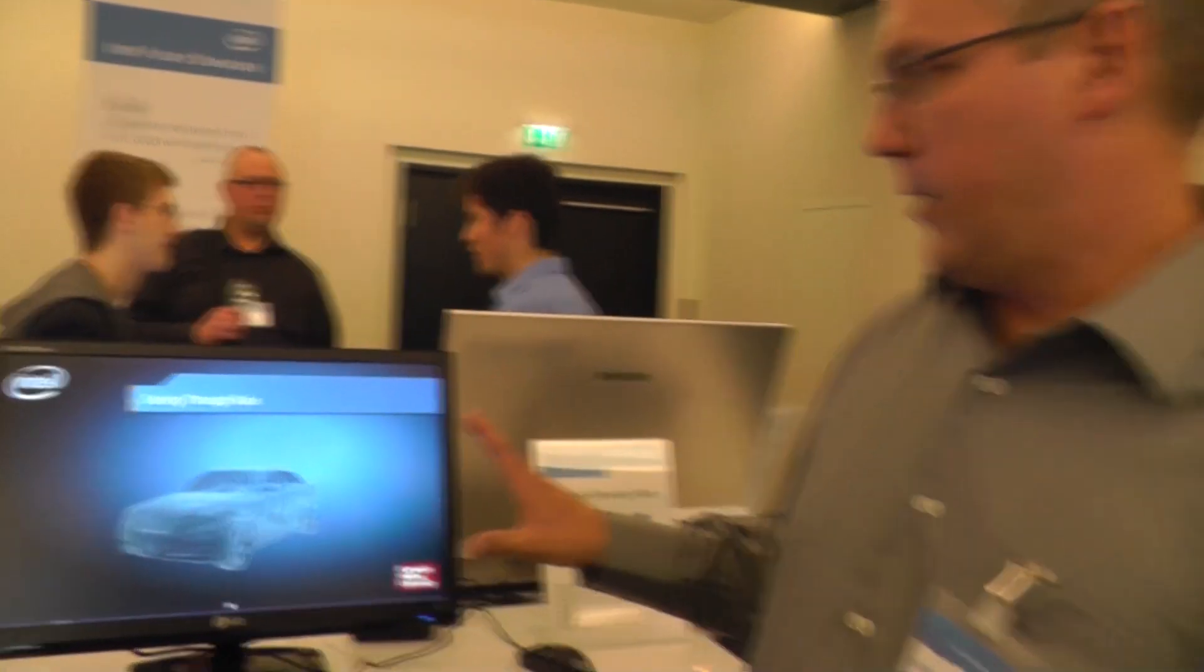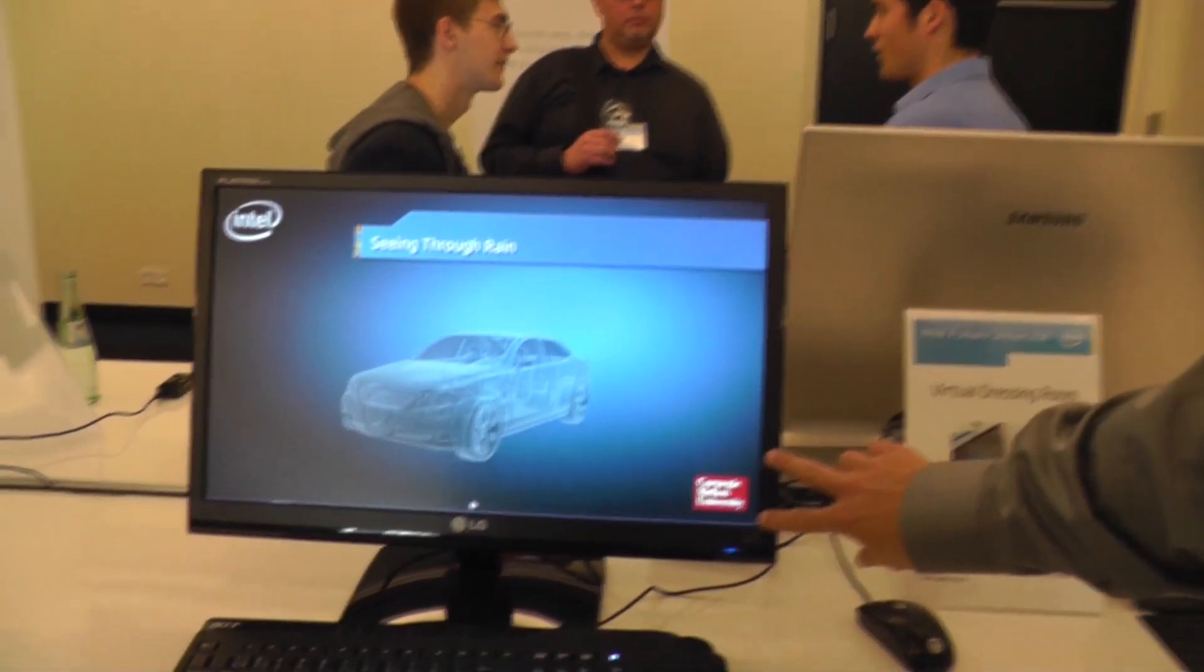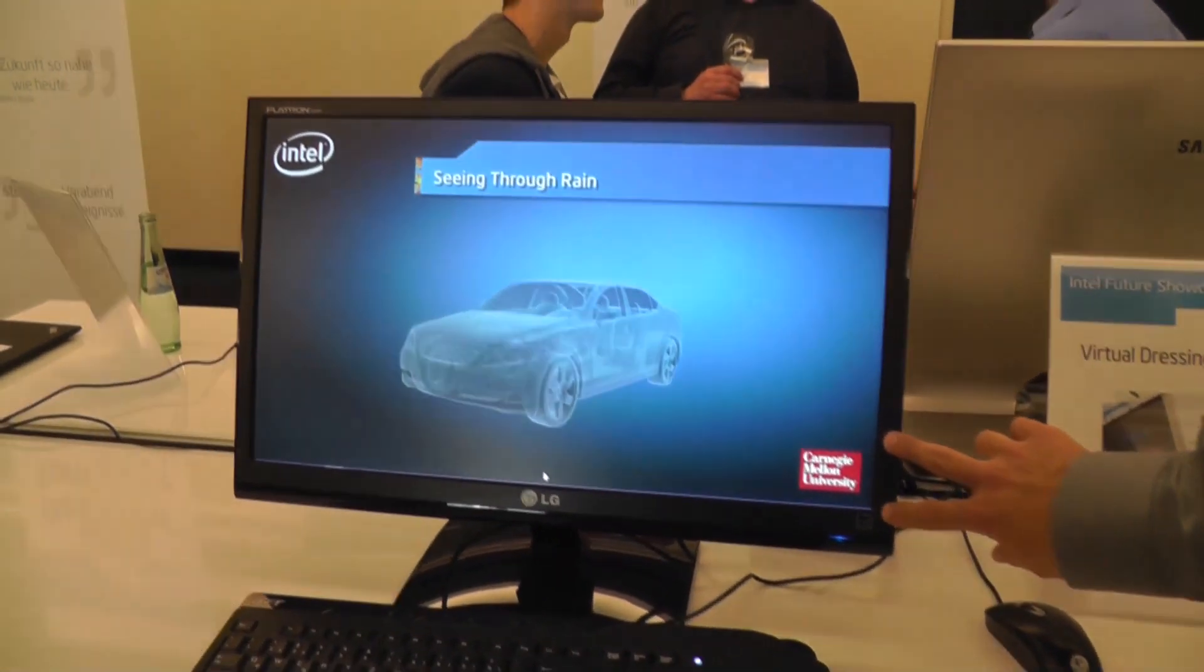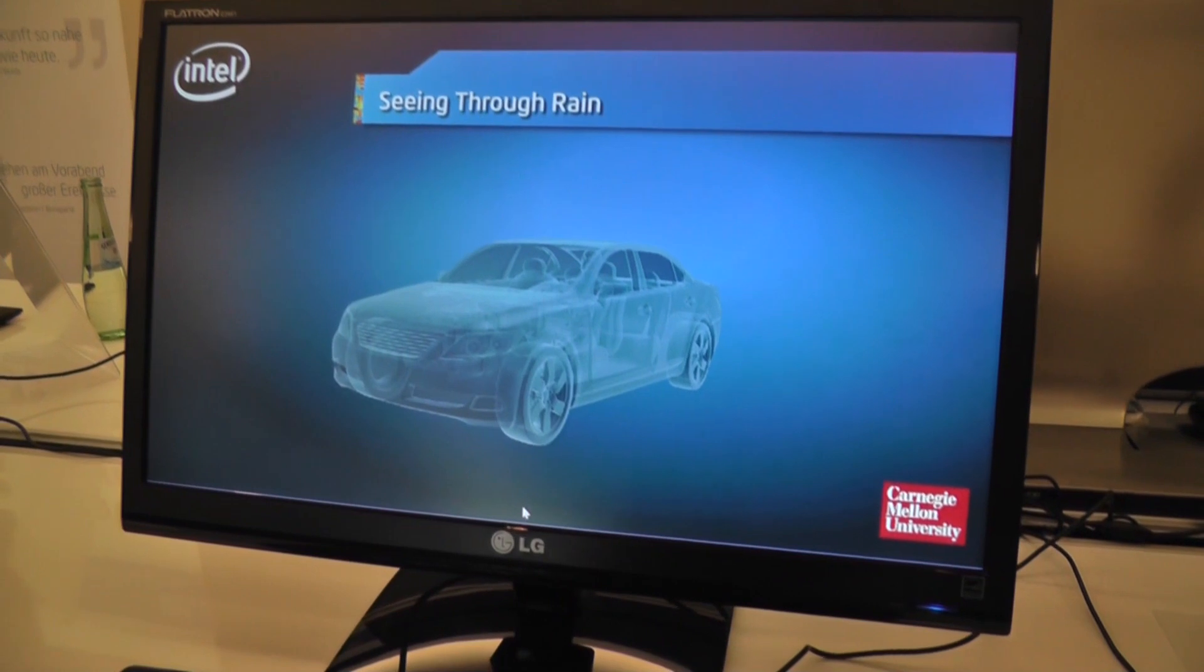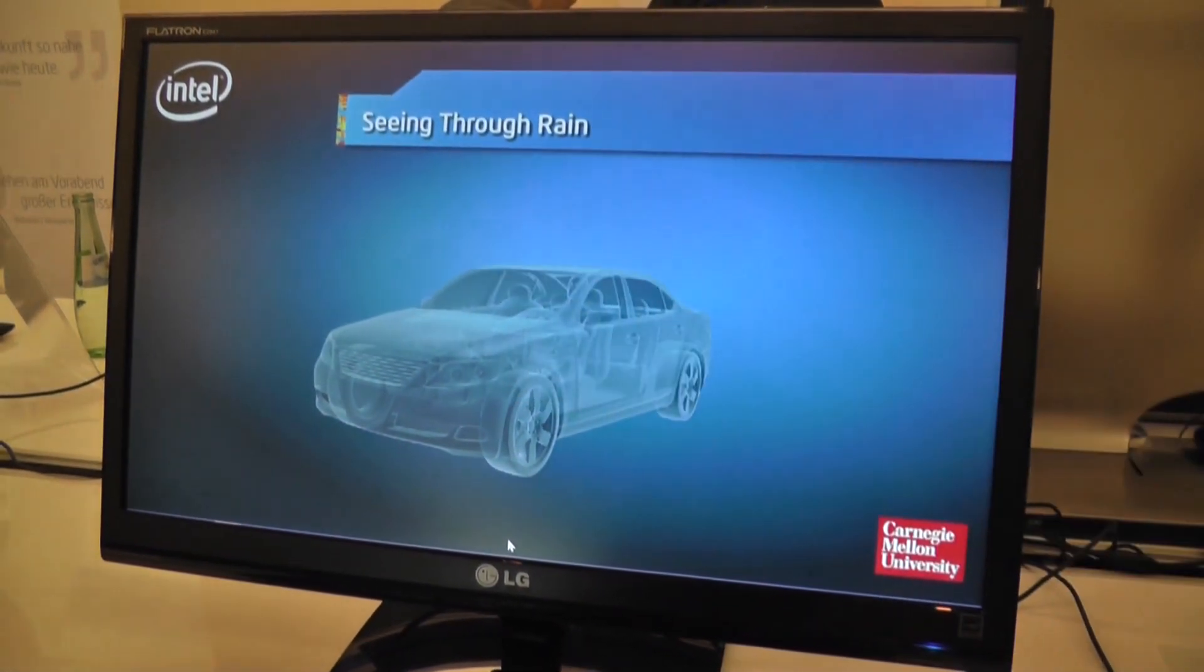I'm John Tompkins with Intel Labs. I'm working and showing on this project that we're doing with Intel Labs and Carnegie Mellon University. The project is focused on creating a headlight that can see through rain.